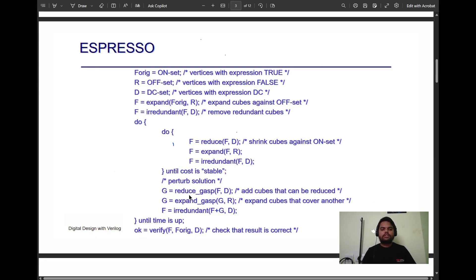For this, we introduce three operations: reduce GSP, expand GSP, and irredundant. In reduce GSP, we add Q that can be reduced. In expand GSP, we expand Q that covers another. Then we do irredundant on the resulting Boolean expression until the time is up. Time is up means we first initialize the Espresso algorithm with the time for which it will run. Then we verify the resultant Boolean expression with the original Boolean expression to check that the result is correct or not.